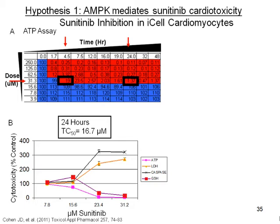I looked at a variety of cytotoxicity endpoints, such as ATP depletion, glutathione oxidation, lactate dehydrogenase release — looking at the integrity of the cell membrane — as well as caspase-3/7 cleavage looking at apoptosis. The TC50 for ATP depletion in these cells was around 16 micromolar.